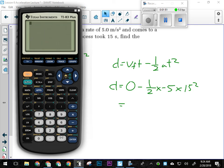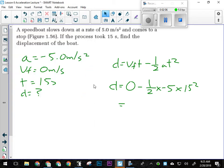So we'll have 0 minus 0.5 times negative 5 times 15 squared. We only have two significant figures there, so we're looking at 5.6 times 10 to the 2 meters forwards.